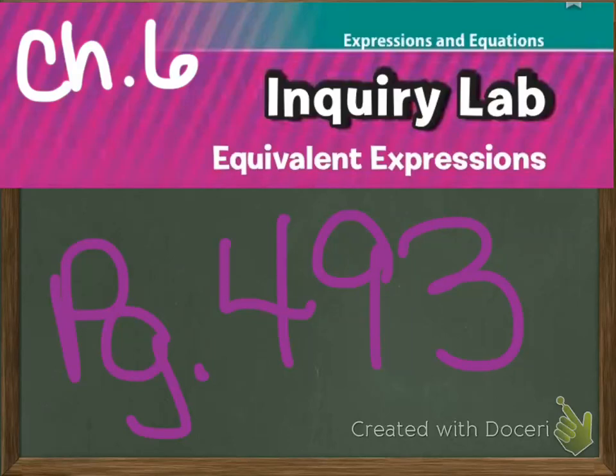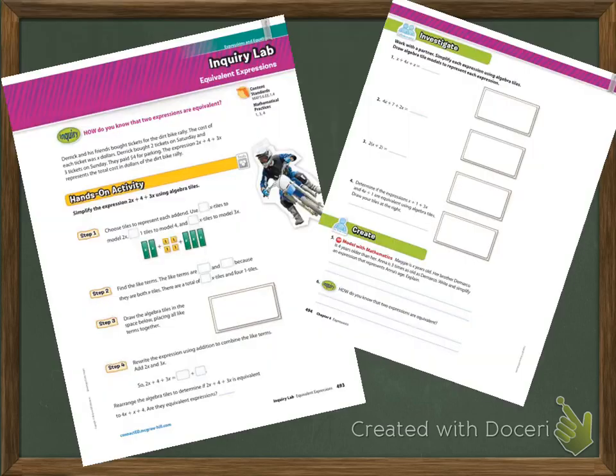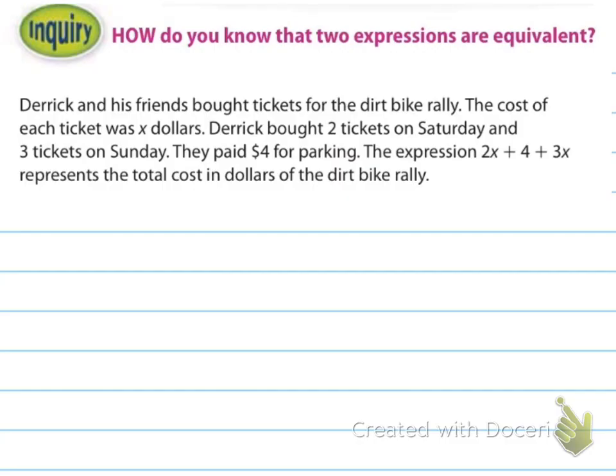Alright, we're looking at Chapter 6, Inquiry Lab, Equivalent Expressions, and that starts on page 493. And these are what the pages look like. So, what we're going to be answering is, how do you know that two expressions are equivalent?